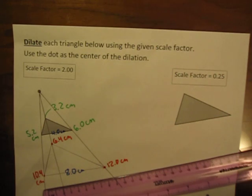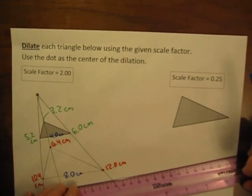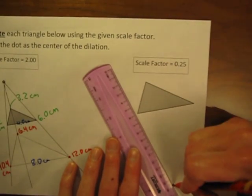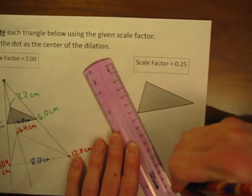So the distance doubled. How am I going to do this one over here? Same way. Step 1, draw lines from the center of the dilation through each of the vertices.